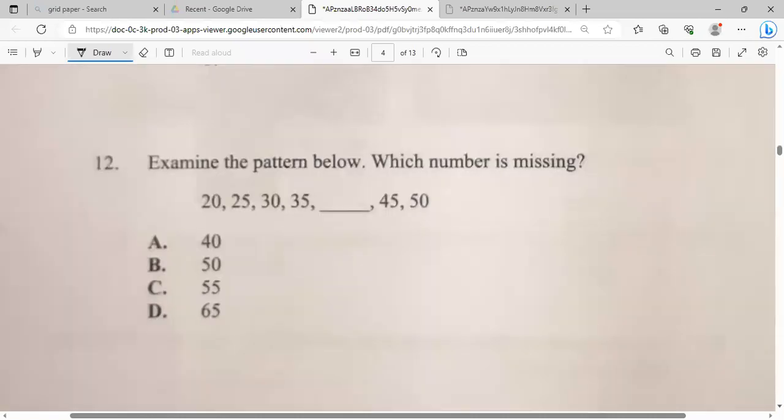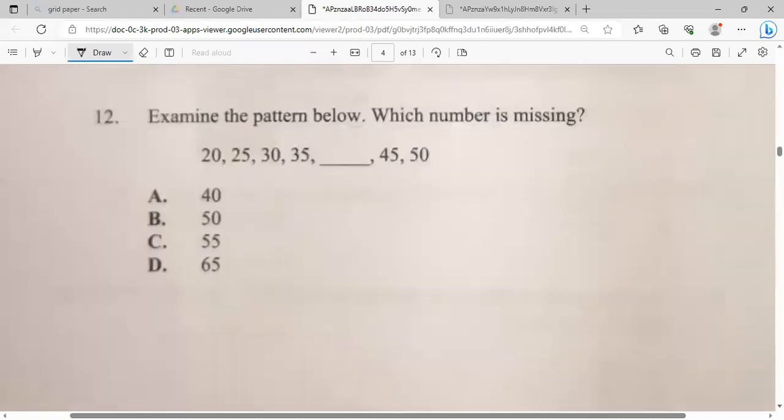Examine the pattern below. Which number is missing? So we have twenty, we go up to twenty-five, then we go up to thirty, then we go up to thirty-five. Clearly, we can see that each time they are adding how many? You get from twenty to twenty-five, how many did they add? You said five. Each time they add in five. So five plus thirty-five will give us forty.